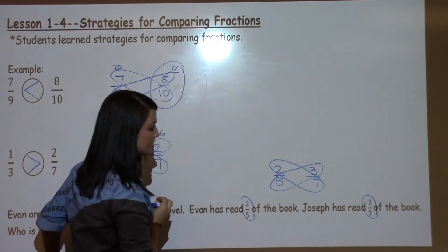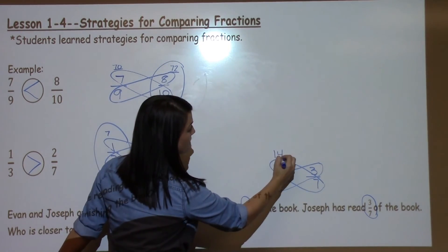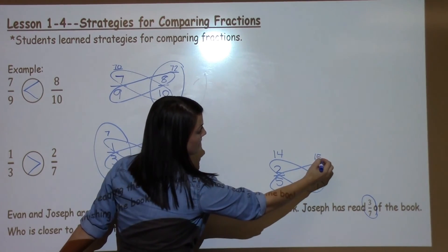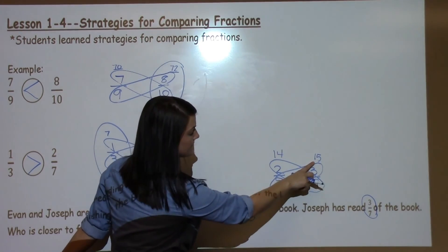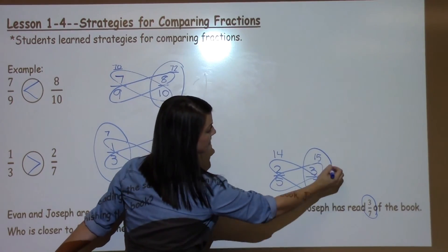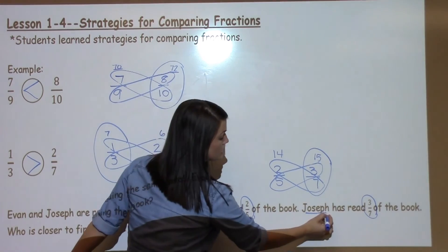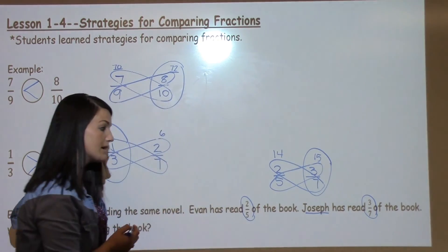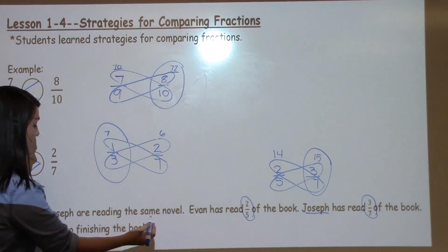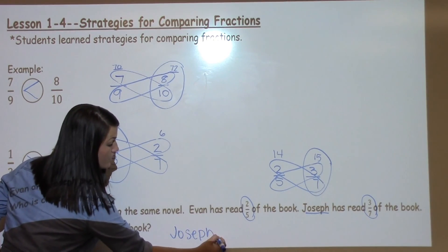I draw the wings around the diagonal numbers. 2 times 7 is 14. 5 times 3 is 15. 15 is just 1 bigger than 14, but that means that 3 sevenths is larger. And that means that Joseph has read more of the book since he has read 3 sevenths of the book, and he is closer to finishing the book.